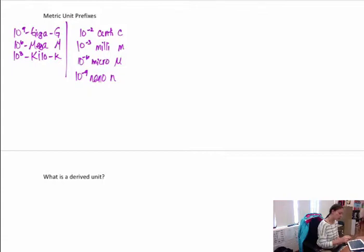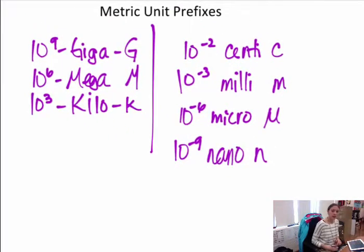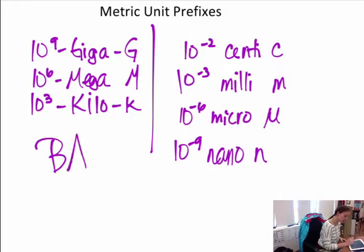The ones on the left here are all ones that are larger than your base unit. The ones on the right are all ones that are smaller than your base unit. We have ten to the ninth is giga, that's a G. Ten to the sixth is mega, M. Ten to the third is kilo, that's a K. And then you would have your base unit.